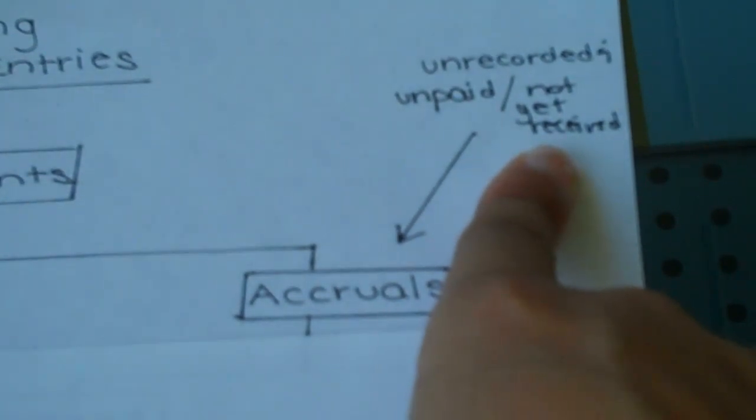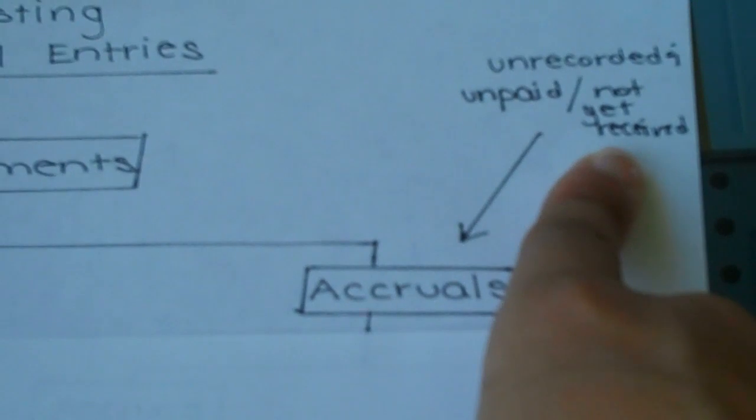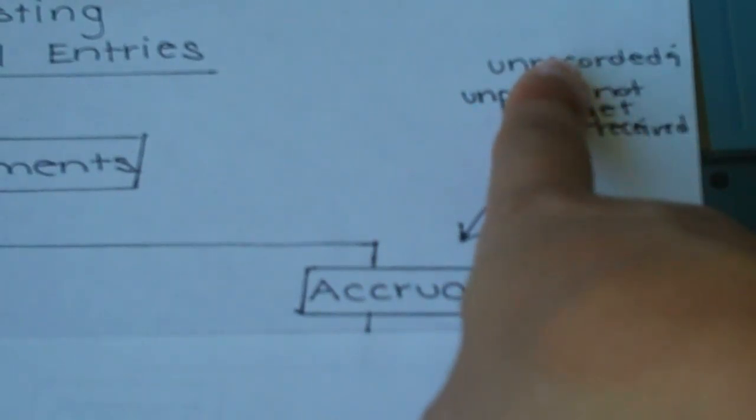We also have accrued revenue, which are items that are unrecorded and not yet received. Let's say we've performed a service for a client but just haven't gotten around to billing them. If we haven't billed them, we haven't recorded it, so it's unrecorded.